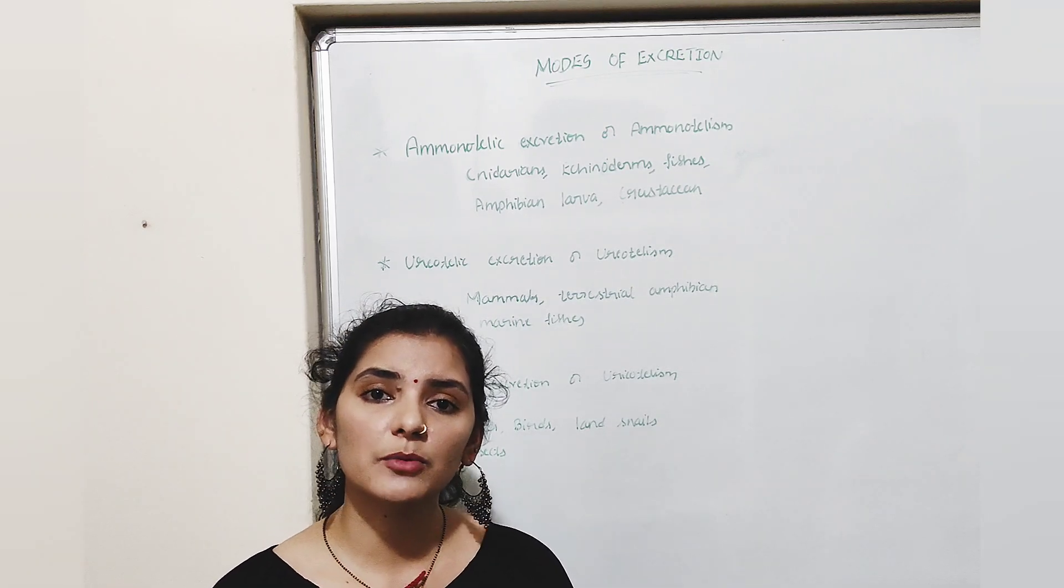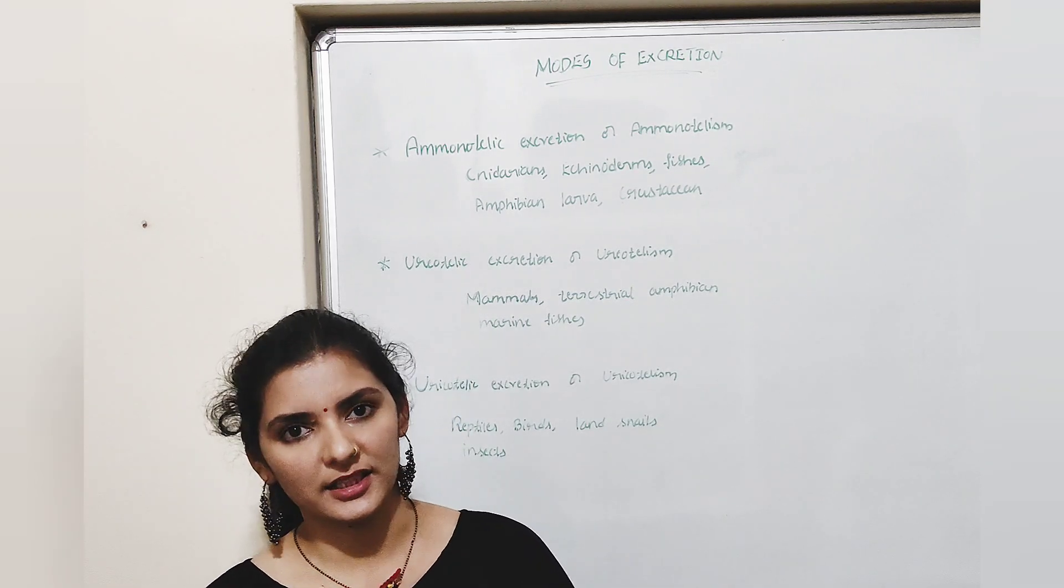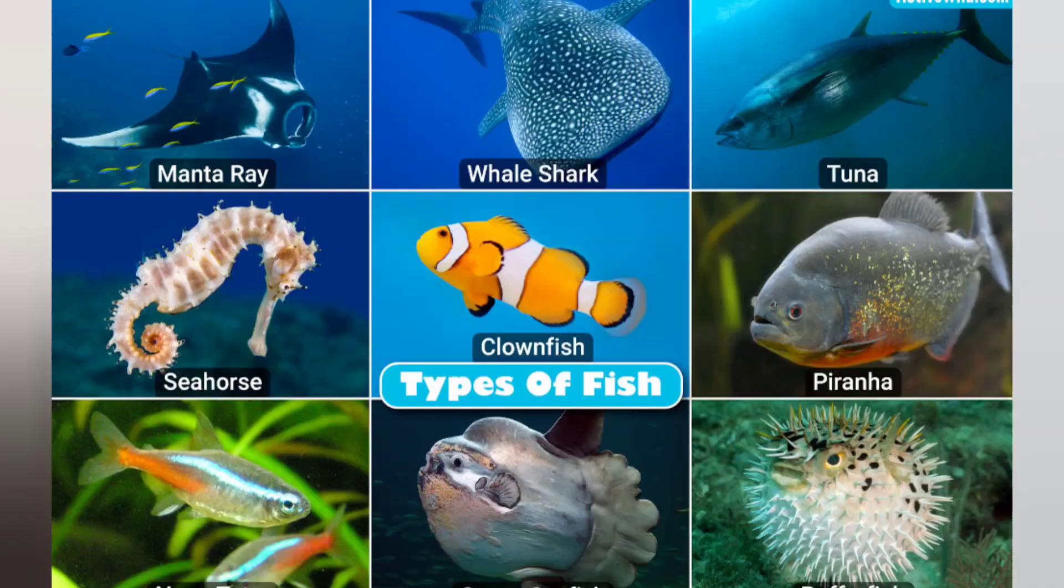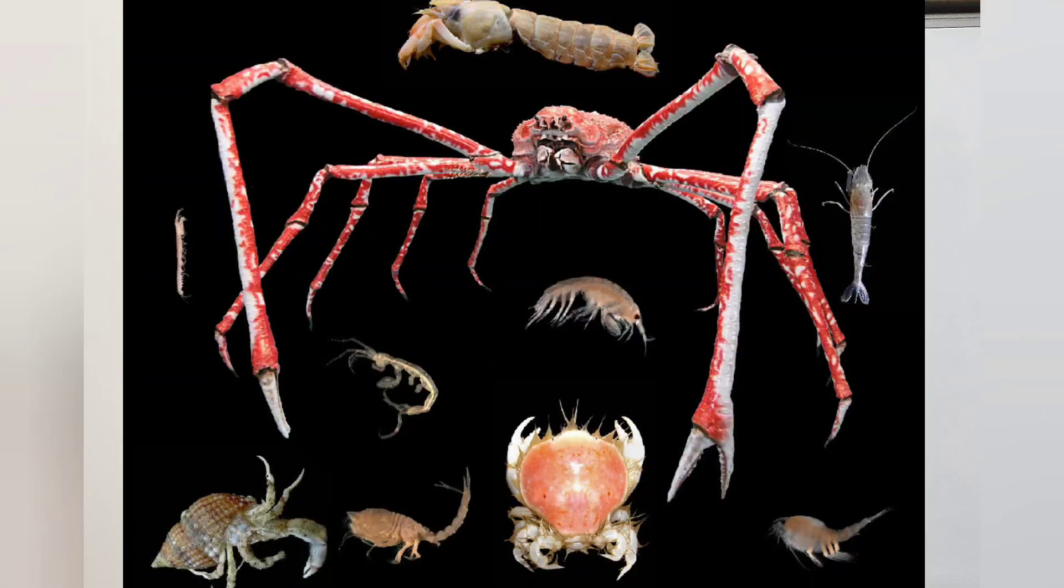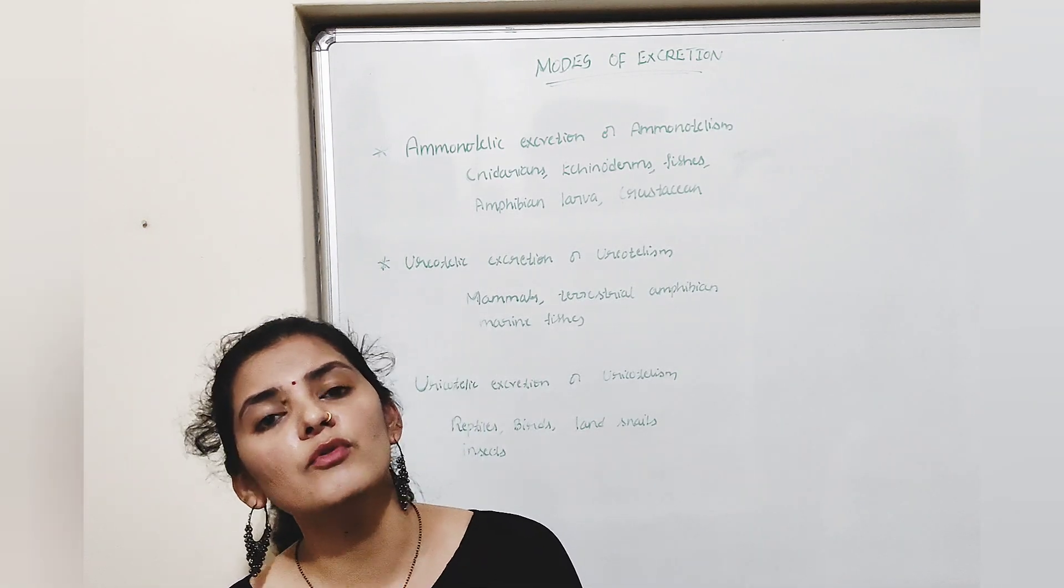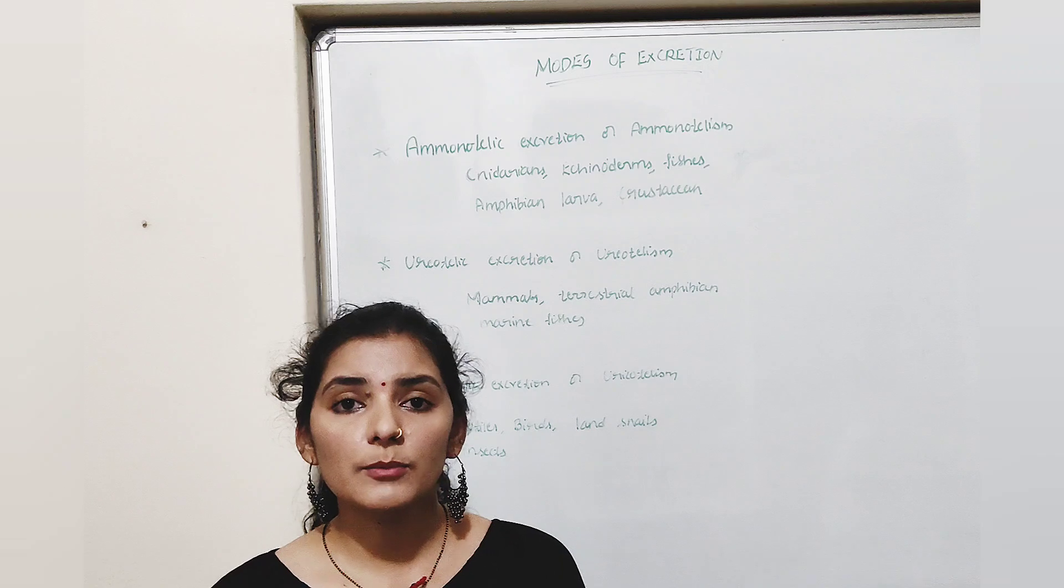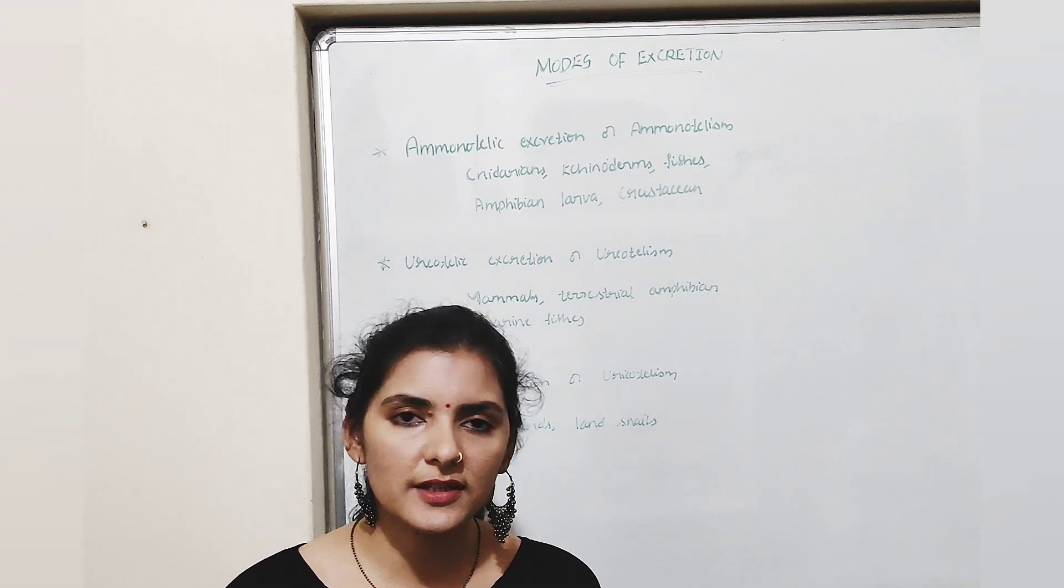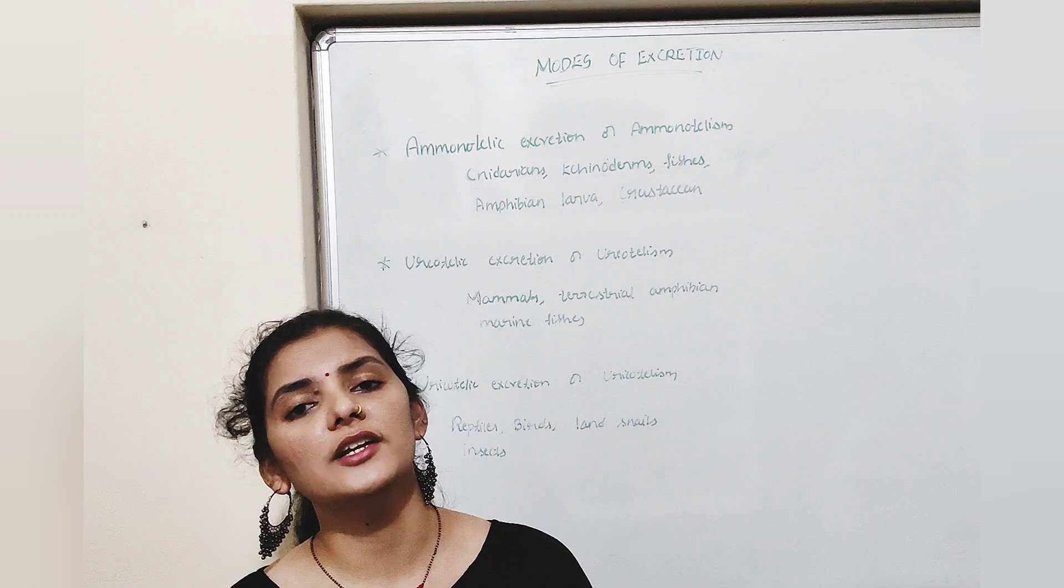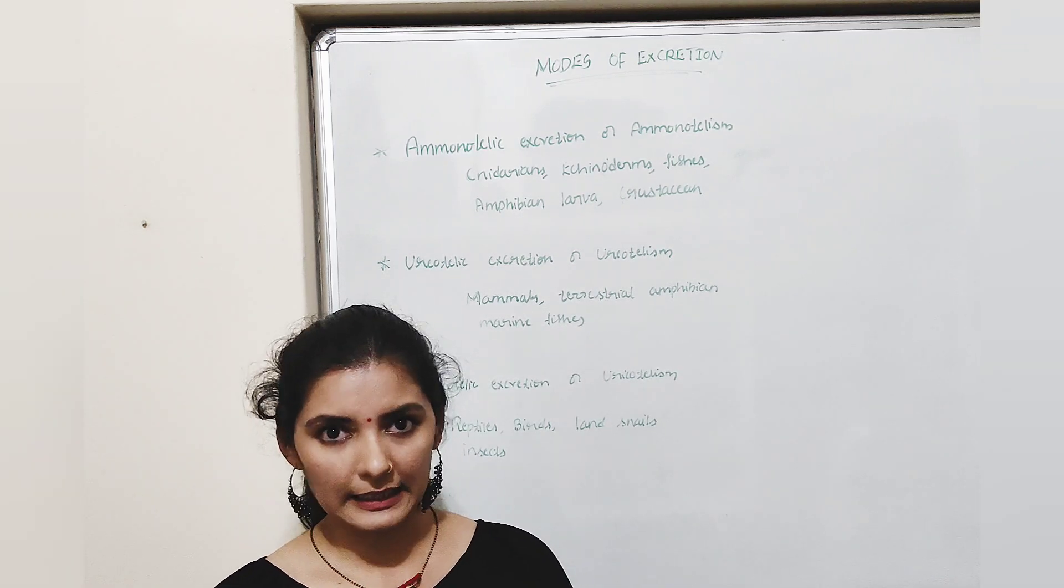Animals which excrete ammonia are called ammonotelic animals. Examples include cnidarians, echinoderms, fishes, amphibian larvae, and crustaceans. These animals excrete ammonia in the form of ammonium ions. These ammonium ions are highly toxic and water soluble. They excrete this ammonia through their general body surface or surface of the gills.